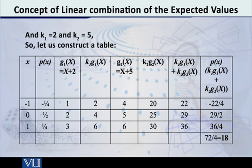So these are the values of this new random variable k1 into g1(x) plus k2 into g2(x), which is written inside the expectation on the left hand side of our equation. And now if we want its expected value, simply multiply these values with corresponding probabilities which are 1 by 4, 2 by 4 and 1 by 4. And after multiplying, add them. That will give you the numerical value of the left hand side of this equation.